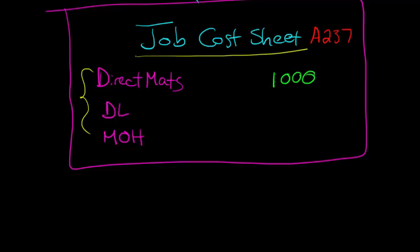Now, the direct labor. Let's say it took 50 hours to build this slide, 50 hours of labor at $10 an hour. If you just multiply the 50 times 10, you're going to get 500. So the direct labor is $500.